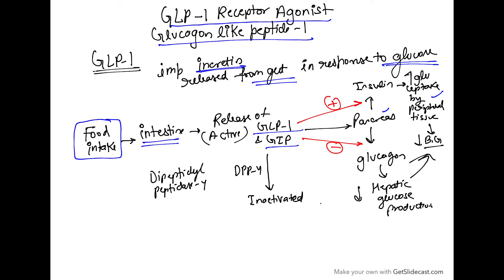So ultimately the blood glucose level will be decreased. Insulin causes peripheral tissue glucose uptake, and because of glucagon inhibition, hepatic glucose production will not occur — gluconeogenesis or glycogenolysis will not happen. So ultimately glucose levels will reduce.